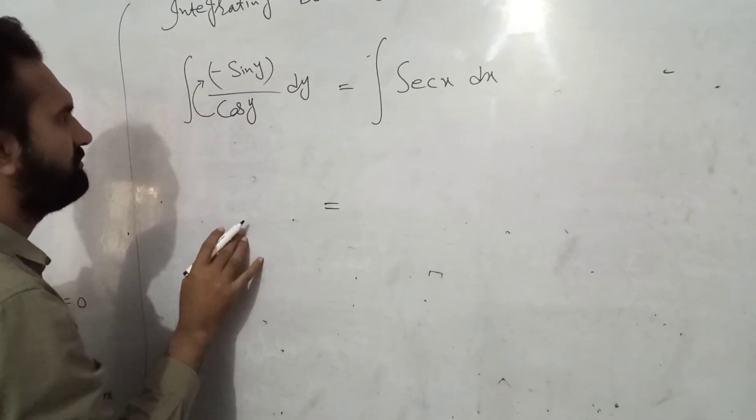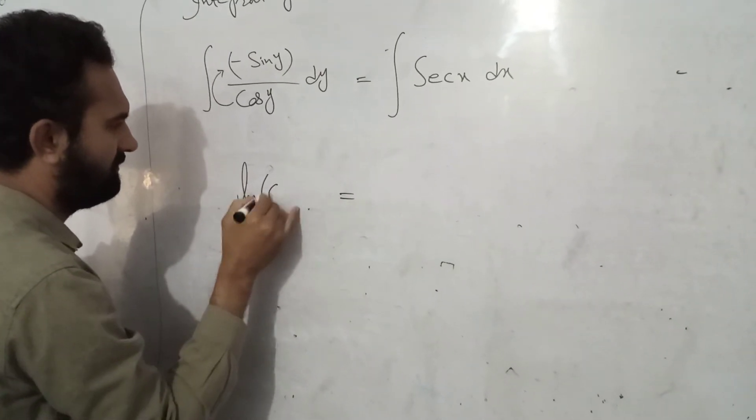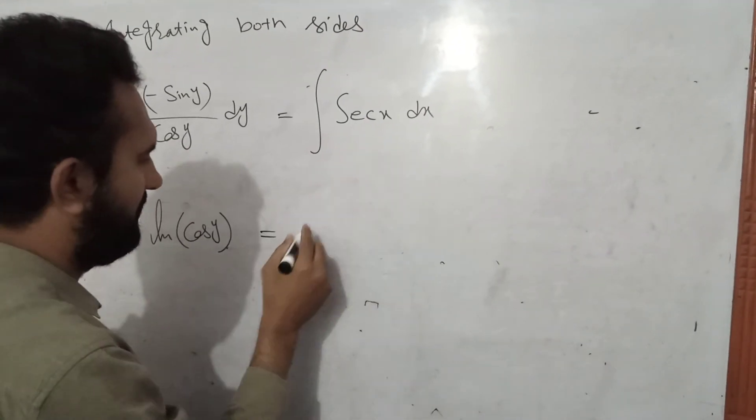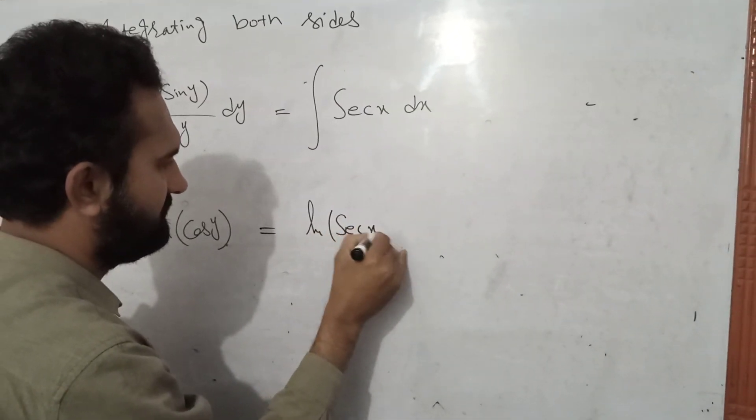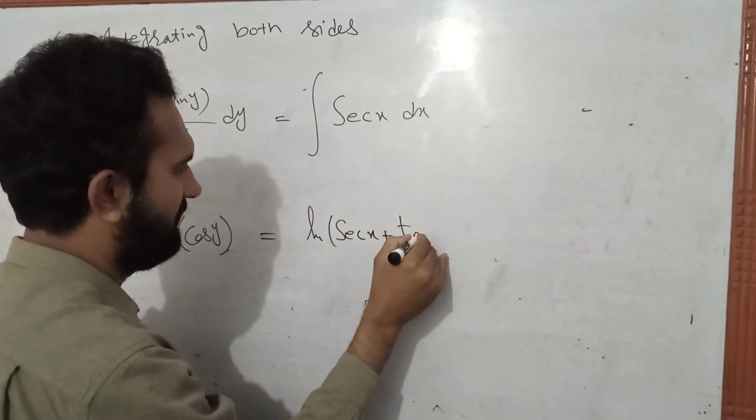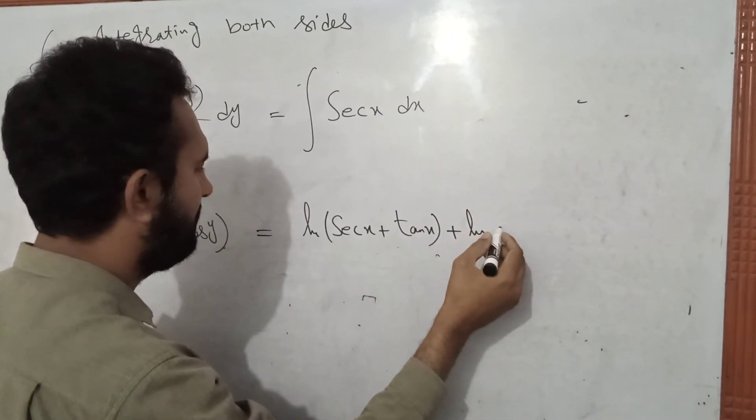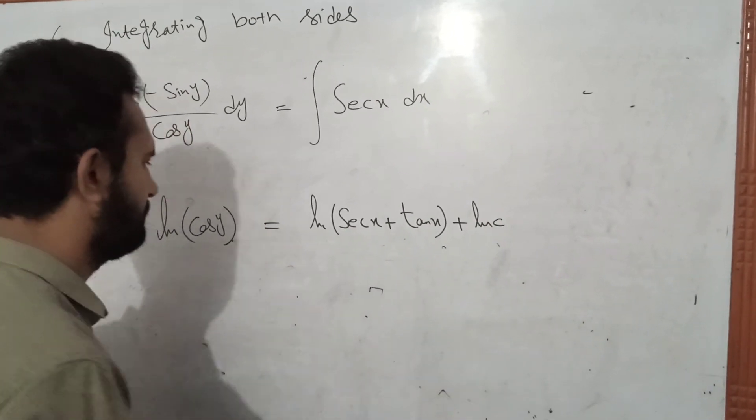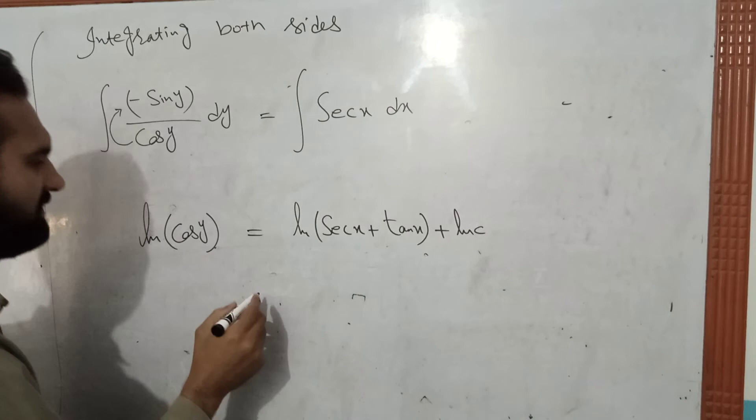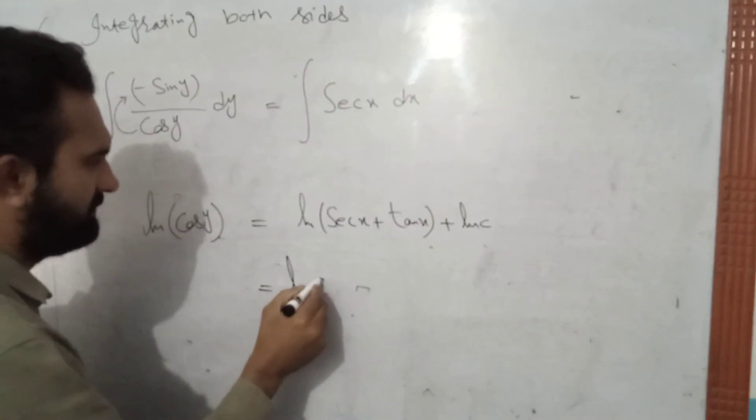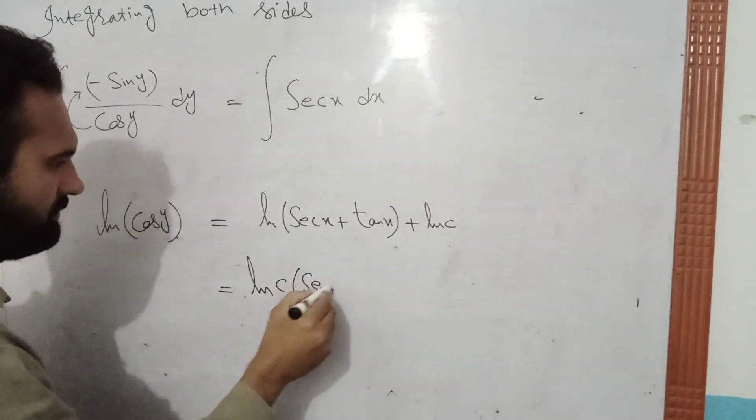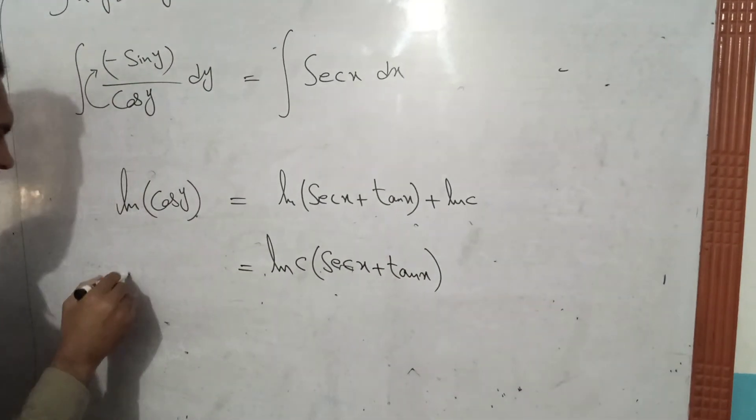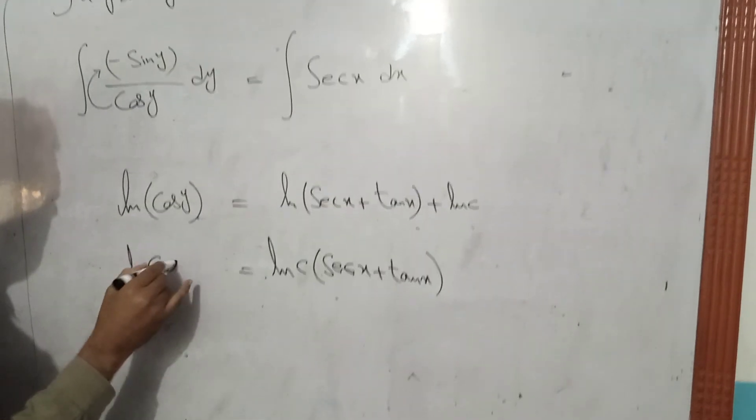minus sin y sin y over cos y into dy equals to integration of. And we can see how many times we can see n of c into second x plus 10 x n of cause y.